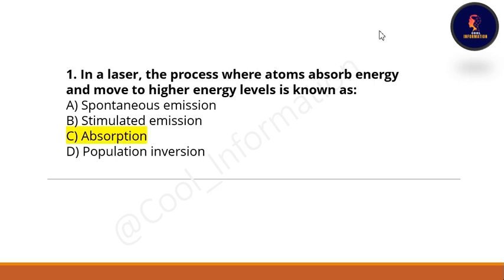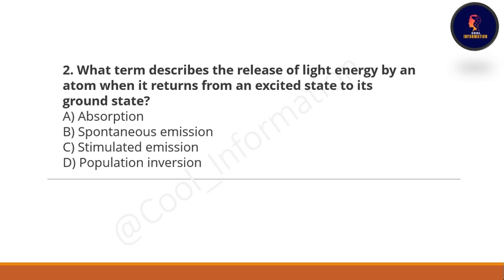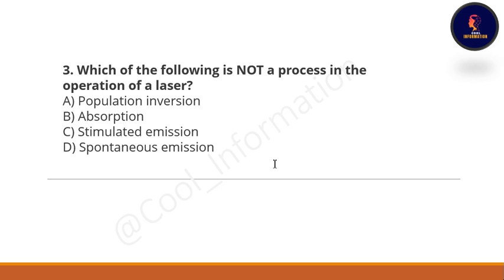Next question: What term describes the release of light energy by an atom when it returns from an excited state to its ground state? Option A: absorption. Option B: spontaneous emission. Option C: stimulated emission. Option D: population inversion. The correct option is B, which is spontaneous emission.